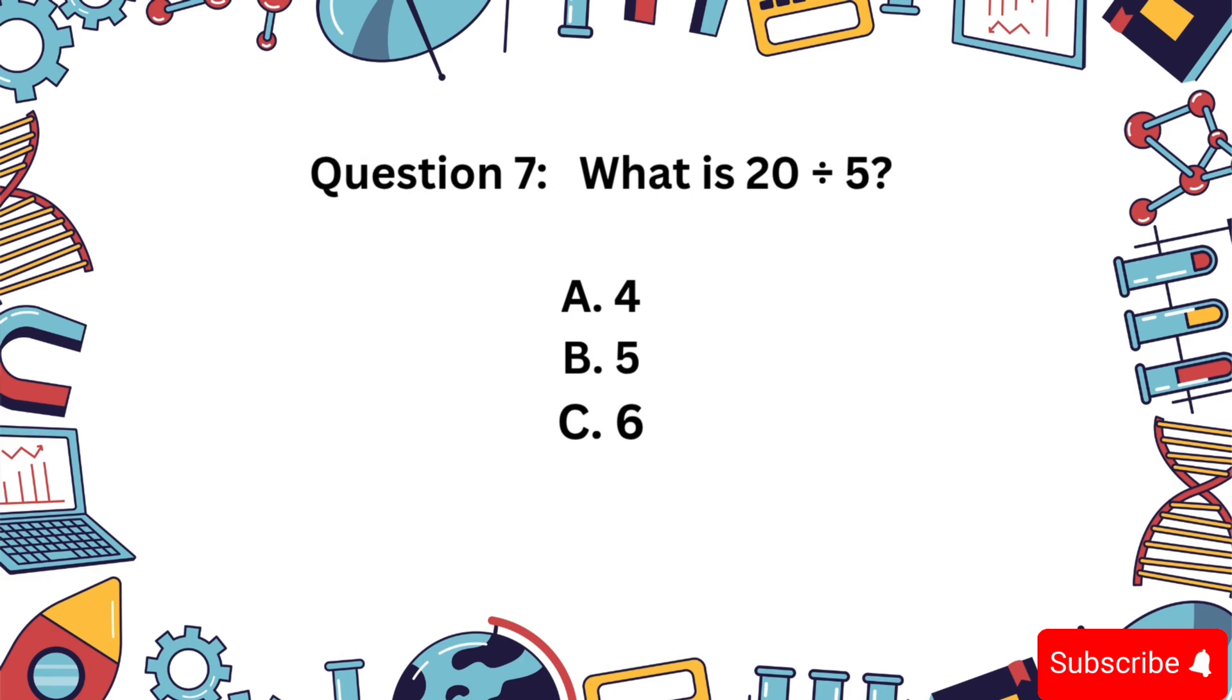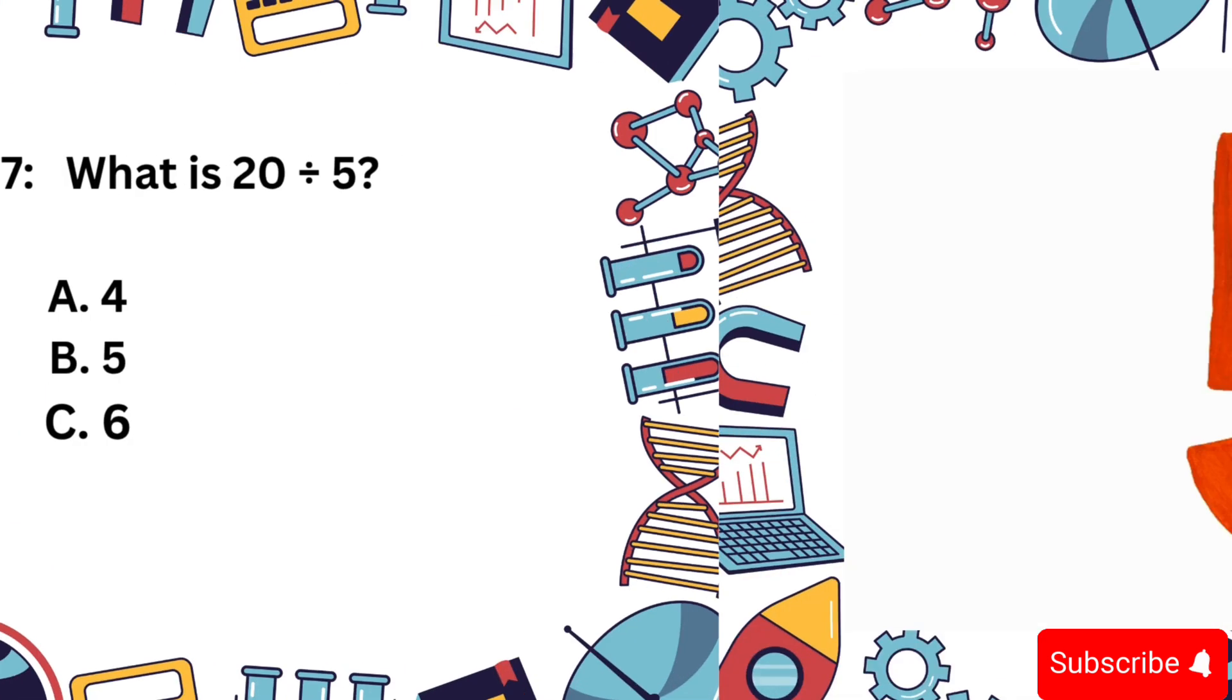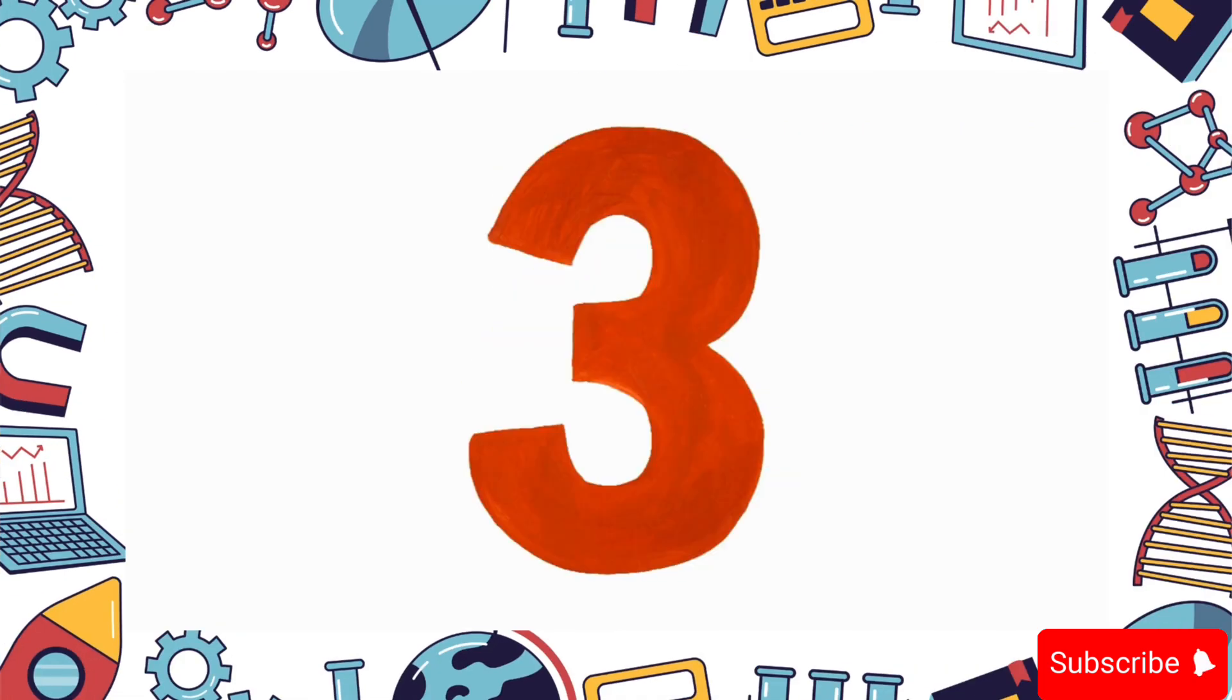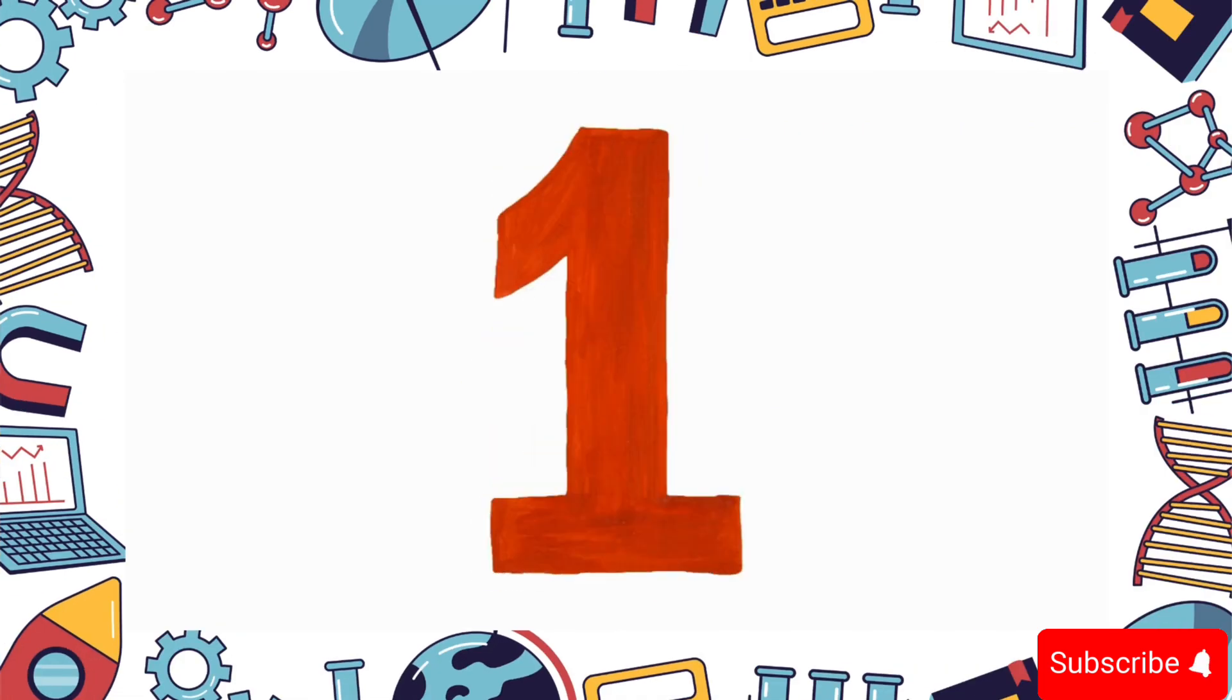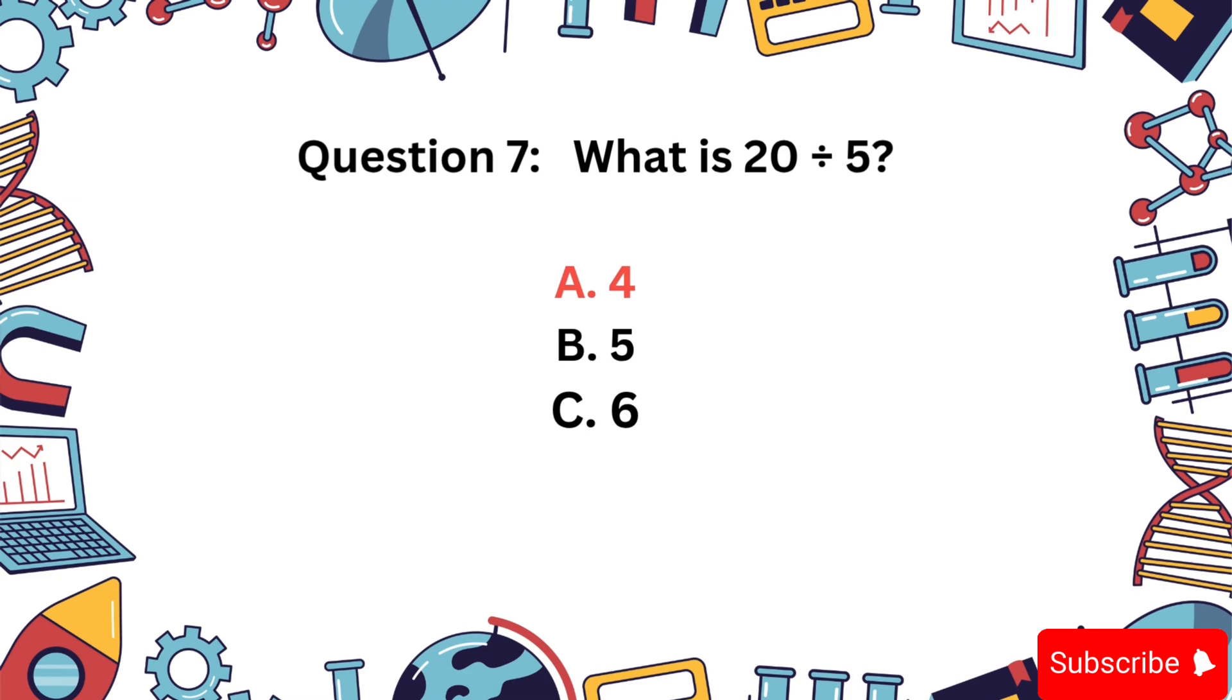20 divided by 5. A, 4, B, 5, or C, 6? The answer is A, 4.